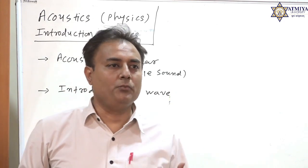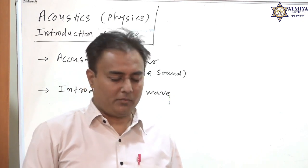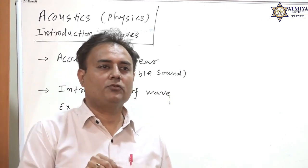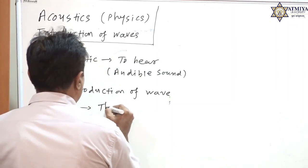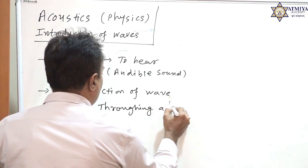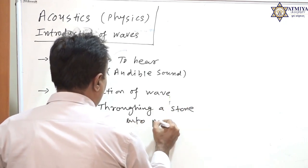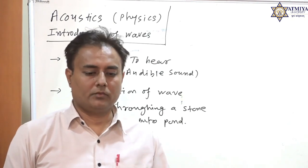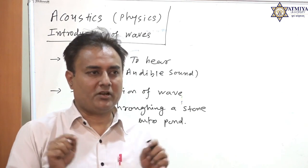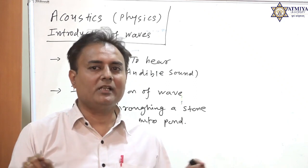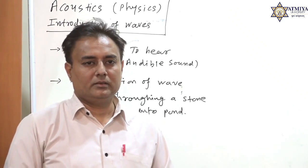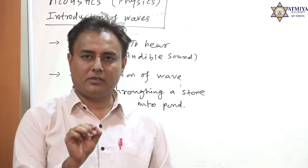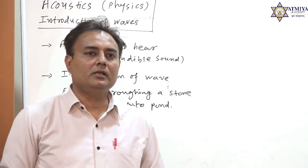To understand what a wave is, let us take a practical example. Let us say we are throwing a stone into a pond. When you throw a stone into the pond, you will notice that a ripple is generated and the diameter of this ripple keeps on increasing as time increases. So we can visually see that something is moving away from the point where the stone was thrown. But what actually is moving?